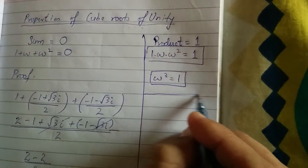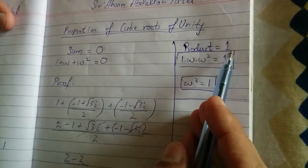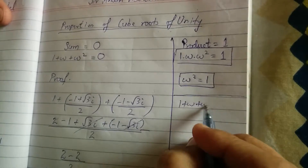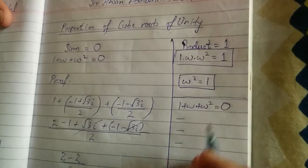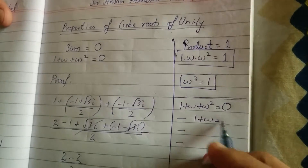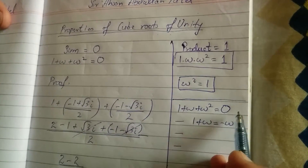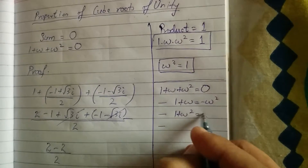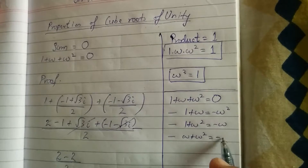So we have studied two basic properties: the sum of cube roots of unity is 0 and the product of cube roots of unity is 1. Sum means 1 plus omega plus omega square equals 0. From this we get direct properties: 1 plus omega equals minus omega square, 1 plus omega square equals minus omega, and omega plus omega square equals minus 1.